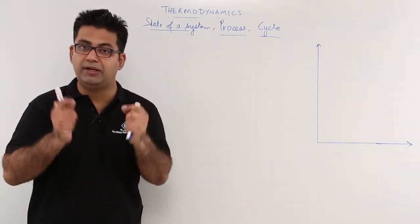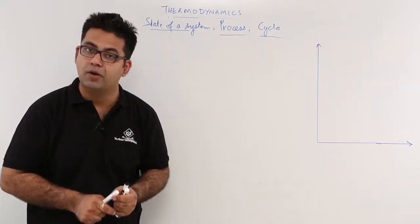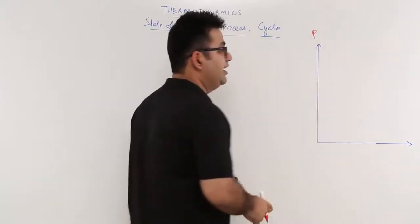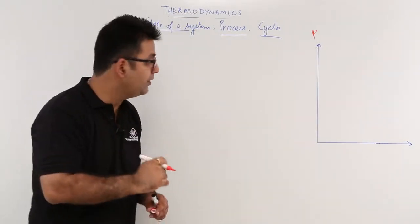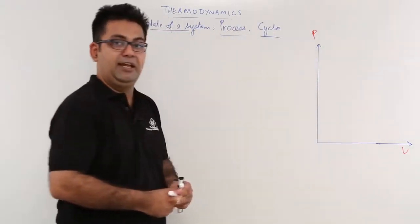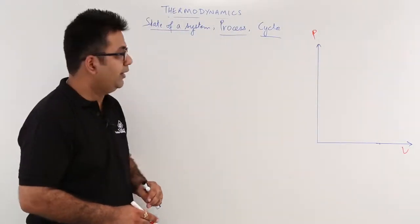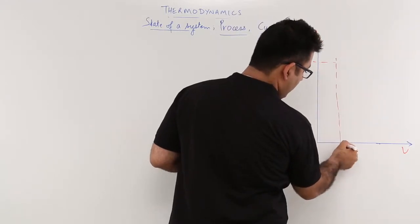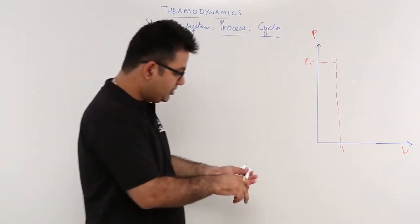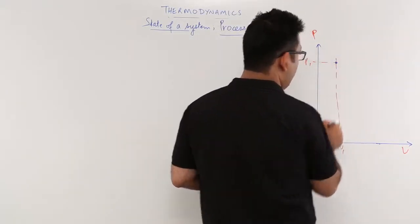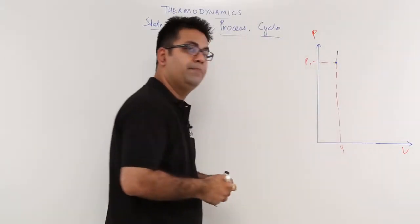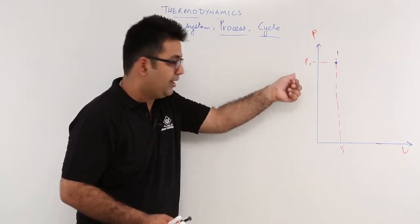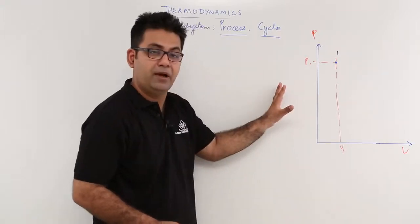The state of a system can only be understood if you understand what is the property of a system. For that, we have drawn two axes. The vertical axis defines or plots the pressure of the system, and the horizontal axis plots the volume of the system. Let us say you have a pressure P1 and a volume V1. At this particular point, let me name this point as 1. At point 1, the physical condition of the system is defined by the property P1 and property V1, so the pressure is P1 and the volume is V1.